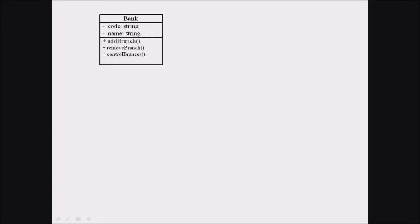We are considering a class called Bank. This class has the attributes code and name, both of which are strings. The minus prefix symbol represents that code and name are private data, meaning they can be accessed by the members of this class as well as classes deriving from it. This class has three public methods: add branch, remove branch, and control branches.